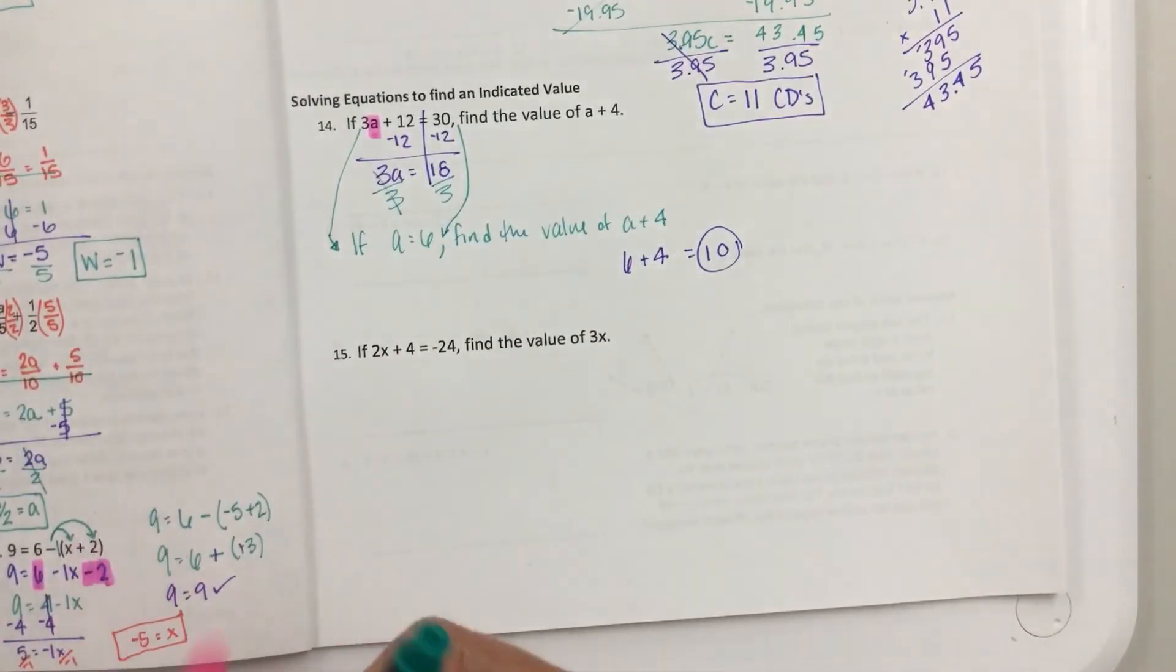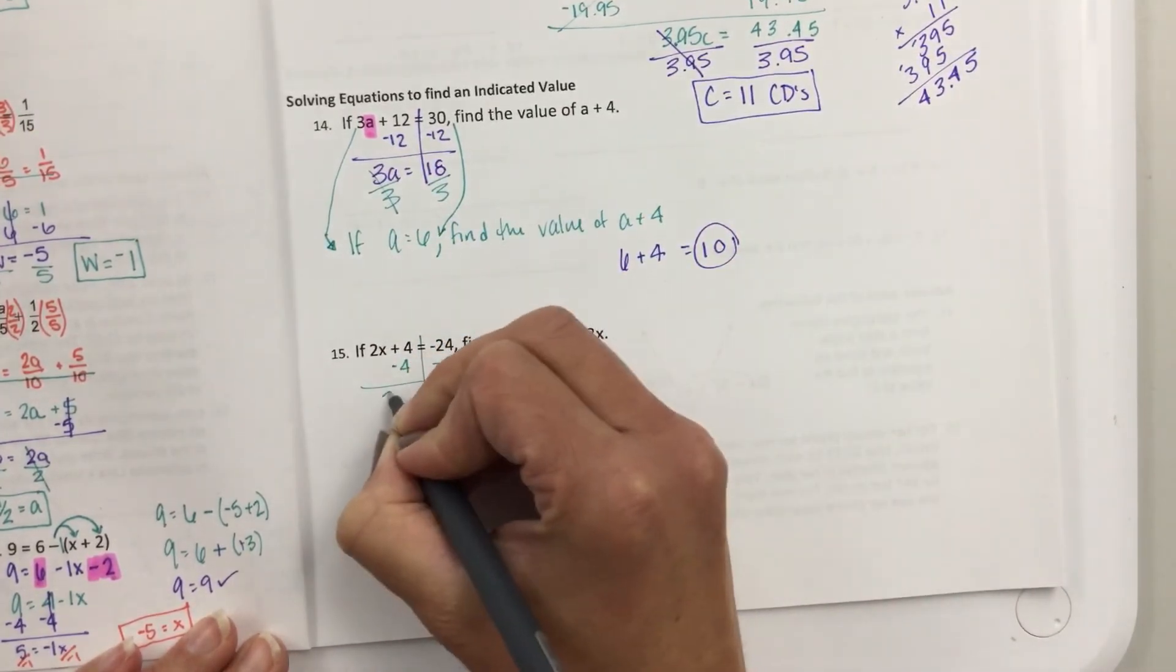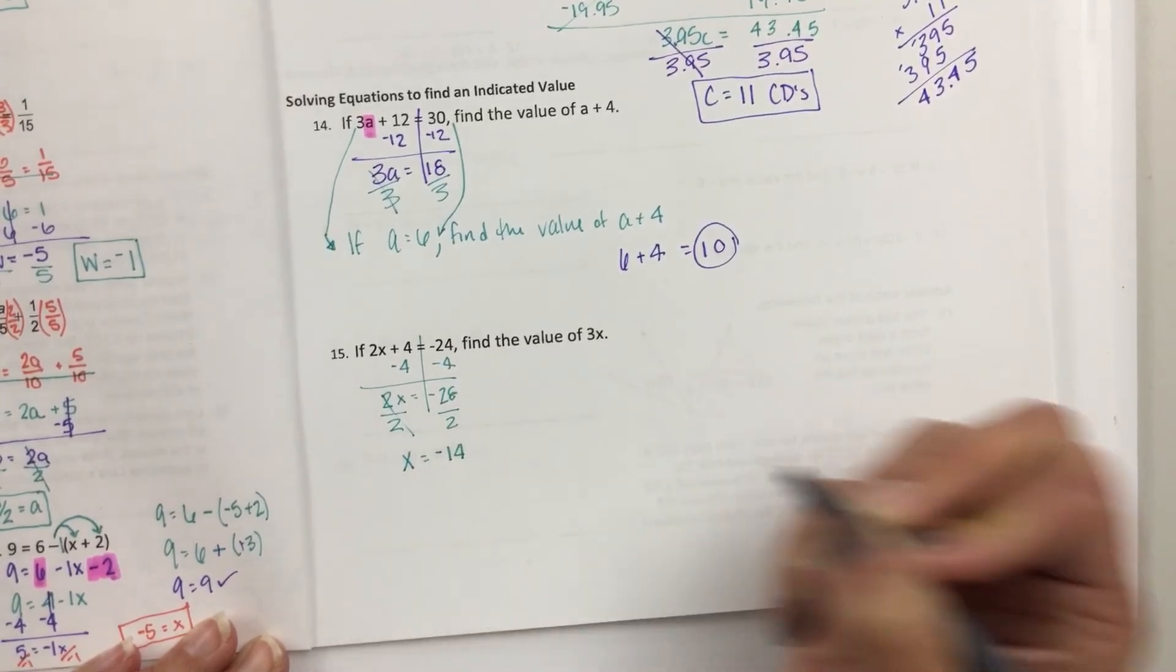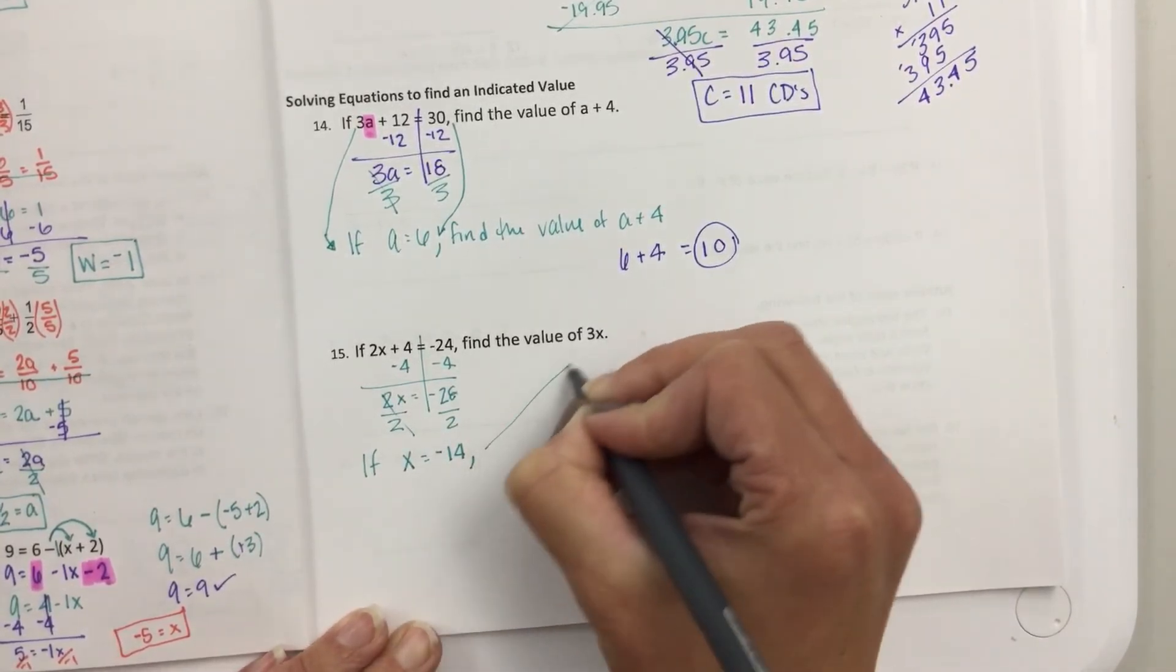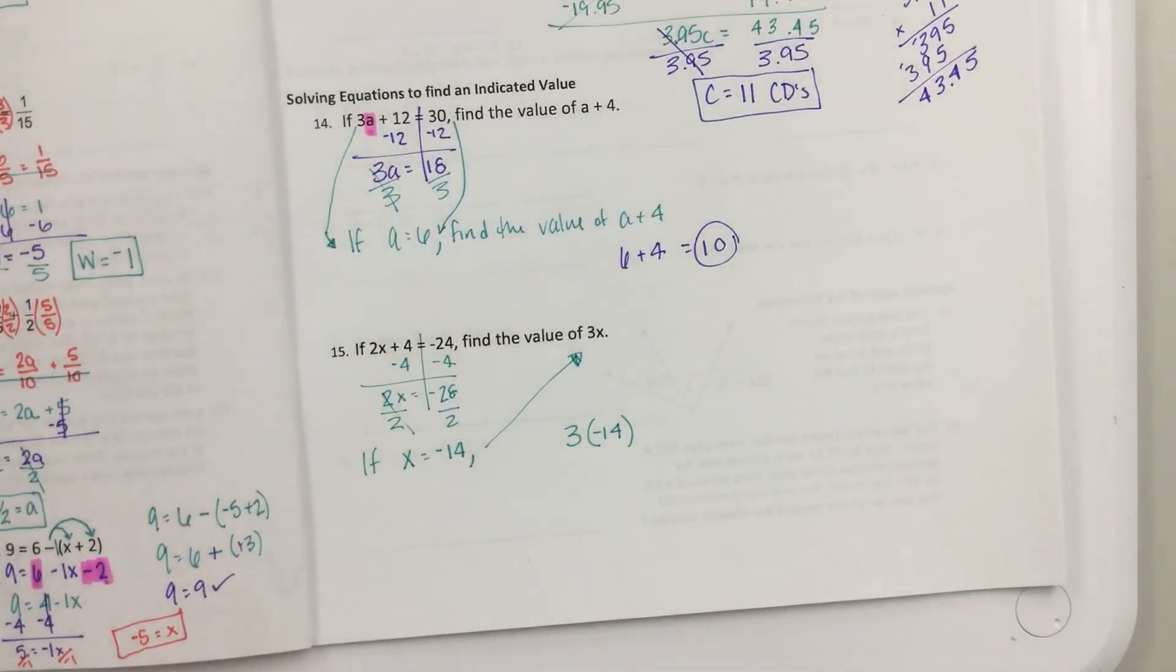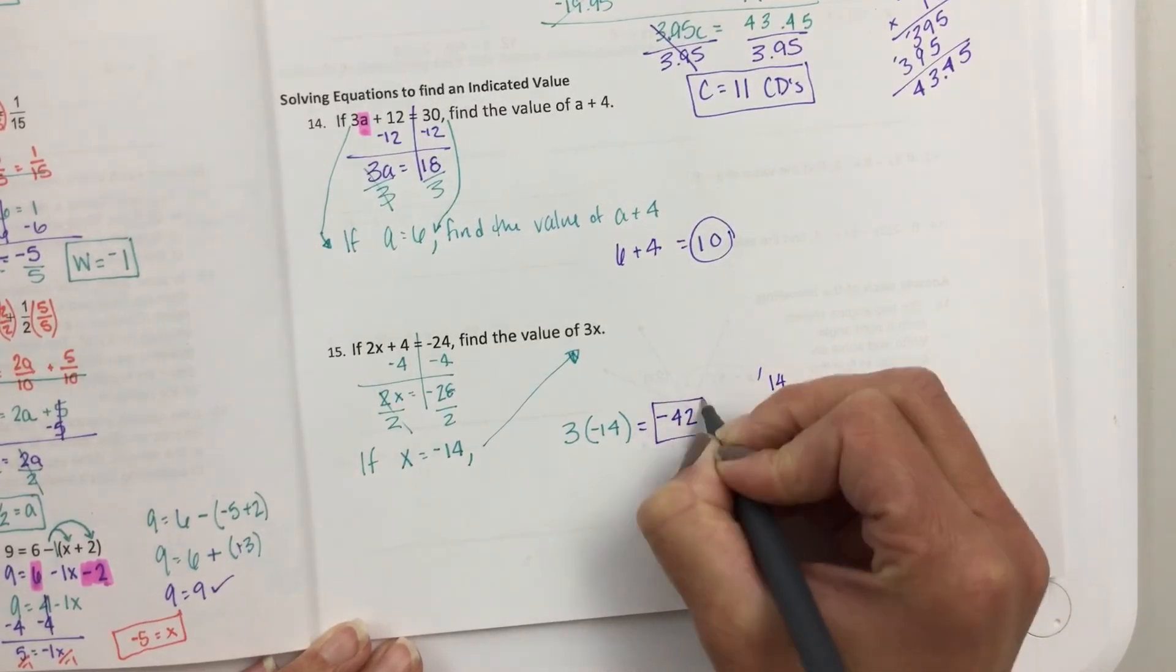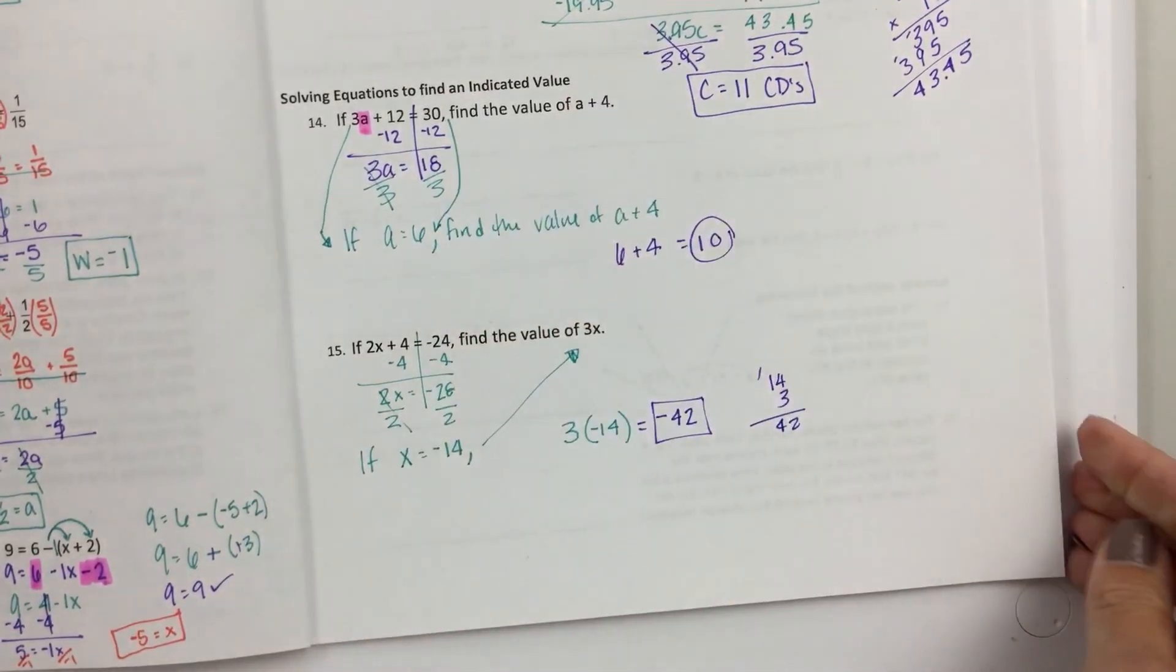We'll do one more like that. So again, ignore this part. Just solve your equation. Minus 4, minus 4. 2x equals negative 28. Divide by 2. Divide by 2. x equals a negative 14. So then it says, if x equals negative 14, then find 3x. So 3 times negative 14. So if I did 14 times 3, I get 42. And that's a negative 42 since one was negative and one was positive. So a little bit trickier, but just take it in two parts and you'll do just fine. Let me know if you guys have any questions.